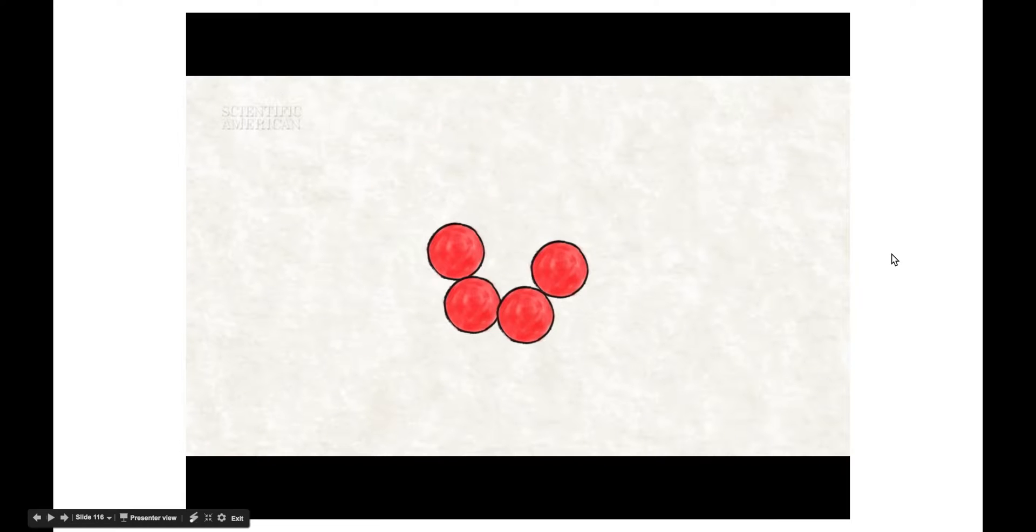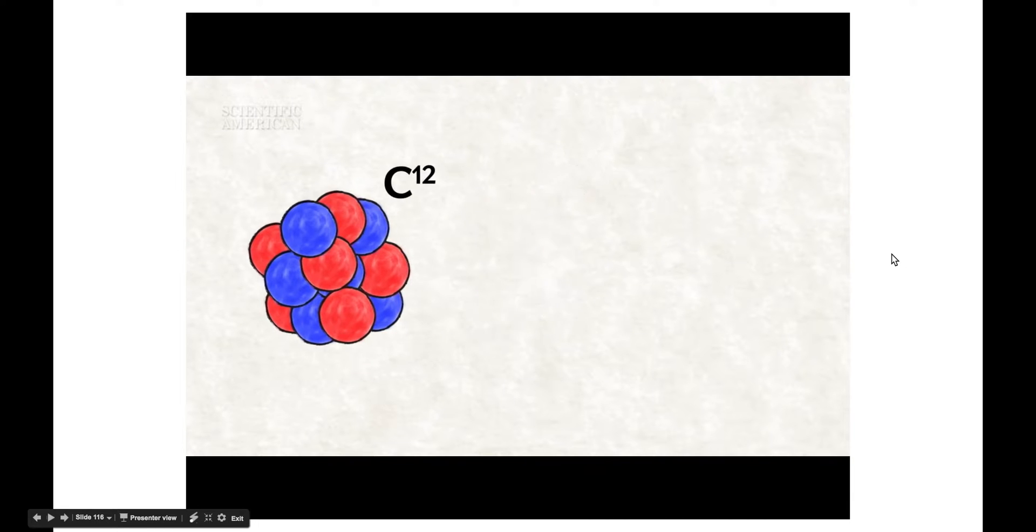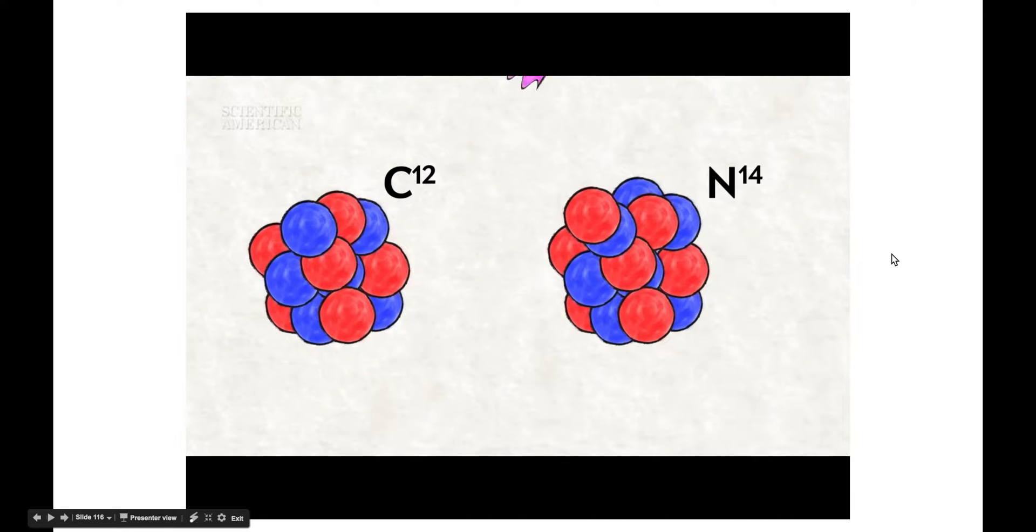Most carbon atoms have six protons and six neutrons. We call this carbon-12. High up in the atmosphere, sometimes cosmic rays hit nitrogen atoms. This creates carbon with six protons and eight neutrons. We call this carbon-14. Carbon-12 and carbon-14 behave alike. But carbon-14 has one unique and important attribute. It's unstable.